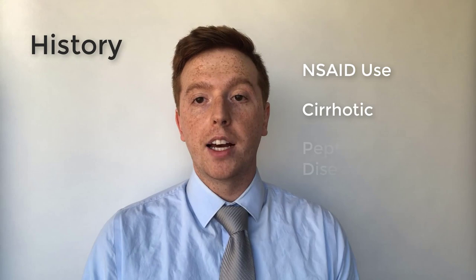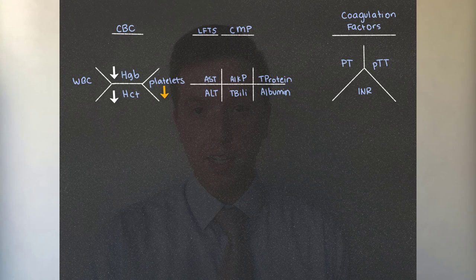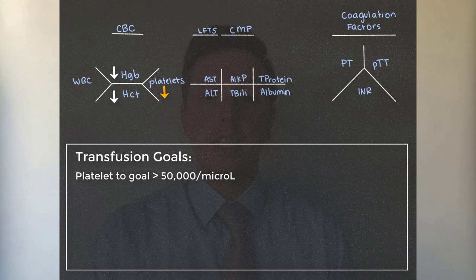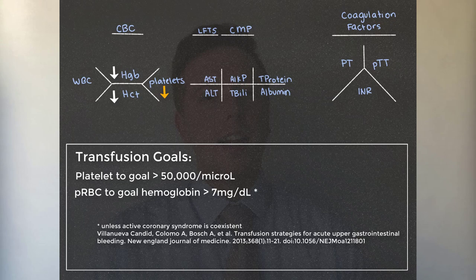The labs you want to obtain for a patient with an upper GI bleed are a CBC, CMP, and INR. For the CBC, look at the hemoglobin. In the first 24 hours of a GI bleed, you might have a falsely elevated or normal hemoglobin because it has not caught up to the acute bleed. Platelets would be low in a cirrhotic patient, and you'd want to replace them if they're less than 50. The target hemoglobin for transfusion is less than seven — studies have demonstrated that a higher transfusion goal does not provide better outcomes in morbidity or mortality.